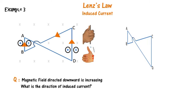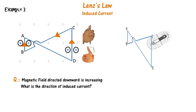An alternative approach is to treat the increasing magnetic field as a magnet moving closer to the loop and establish the magnetic field that will be created in the loop to oppose this movement. We arrive at the same conclusion.